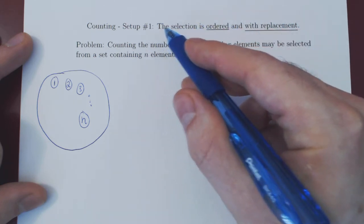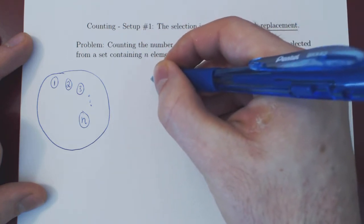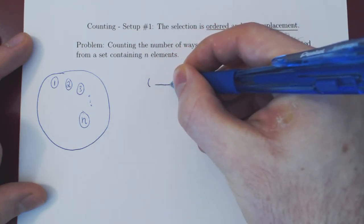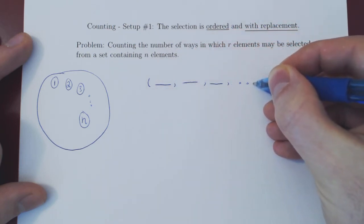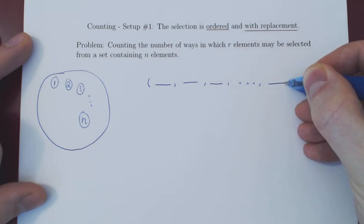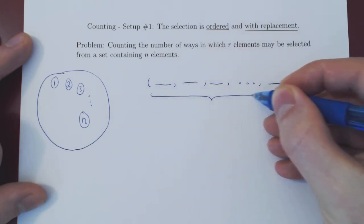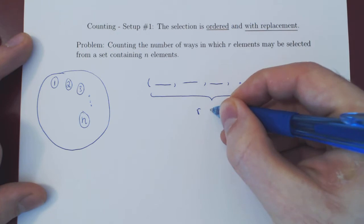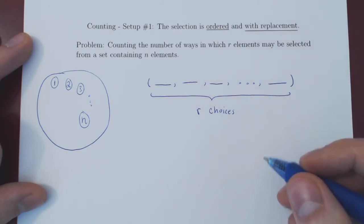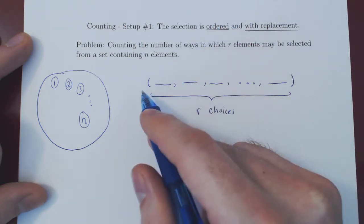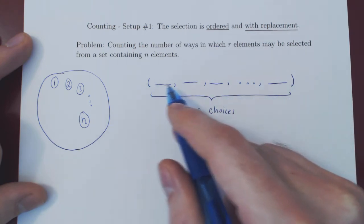Because our selection is ordered, what we have is a Cartesian product. We can visualize it: we have our first selection, then our second selection, then our third, up to our r-th selection, because we choose r elements. So this is what order gives us — we have to keep track of which came first, second, third, and so forth. It is just a Cartesian product.